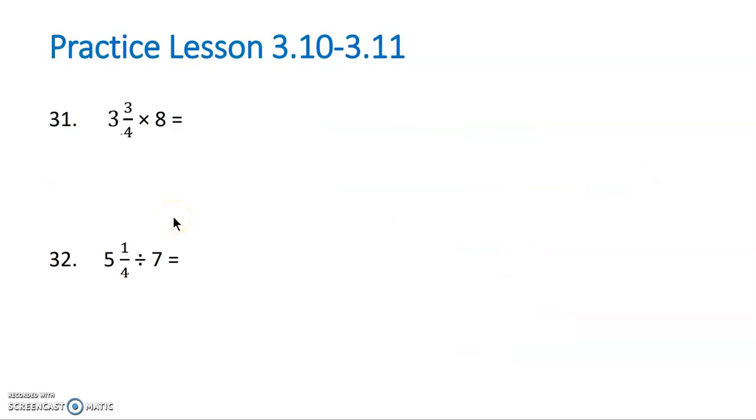So for 31, we're first going to change our fractions to improper fractions, and then we'll multiply. 4 times 3 is 12, plus 3 is 15. So we have 15/4. Multiply to a whole number, 8. So we're going to put that 8 over 1. We can divide 4 and 8, both by 4. And then we multiply our numerators. 15 times 2 is 30. Multiply our denominators. 1 times 1 is 1. So our final answer will be 30.